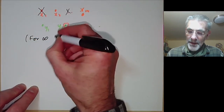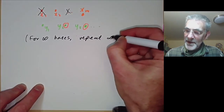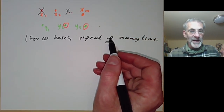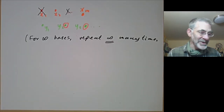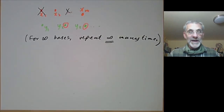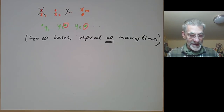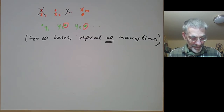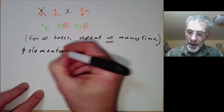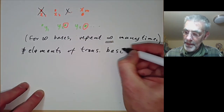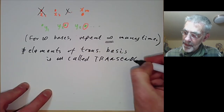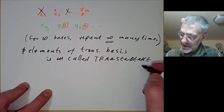For infinite bases, we have to repeat this infinitely many times, and this may be a problem because the number of times may be uncountable. To handle this you need variations of the axiom of choice — but I'm not going to bother with that, because if you're talking about the differences between uncountable objects, you're doing set theory, not algebra. So: any two transcendence bases have the same number of elements, and the number of elements of a transcendence basis is called the transcendence degree.